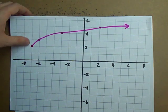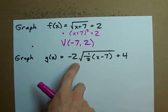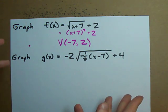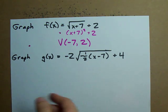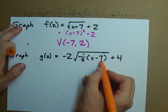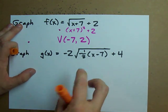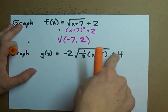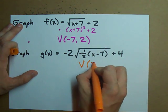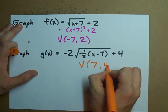What I would like to do with you is to graph a little bit more of a complicated one. This just looks plain ugly. And what you'll notice is that we still have a vertex. The vertex is still what's added or subtracted from x with the sign flipped and then what's added or subtracted from the end.